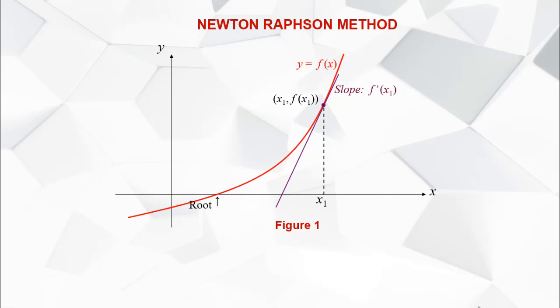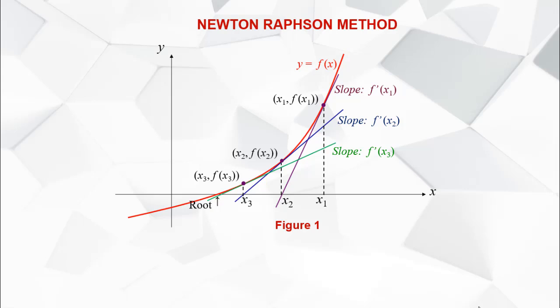The improvement of the estimation x sub 2 is obtained by taking the tangent line to f(x) at the point (x sub 1, f(x sub 1)) and extrapolating the tangent line to find the point of intersection with the x-axis. Note that x sub 2 is now nearer to the root compared to x sub 1. The process continues until we meet the stopping criteria; for our discussion we will keep iterating until we get two consecutive same values.